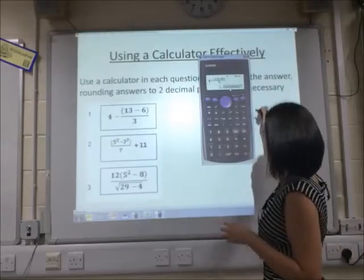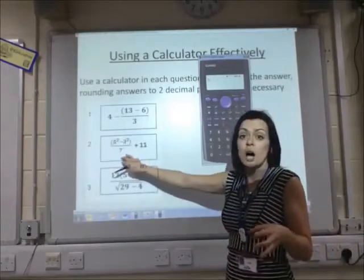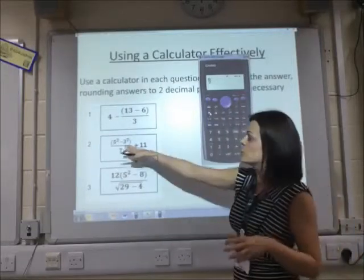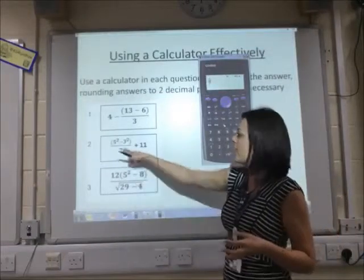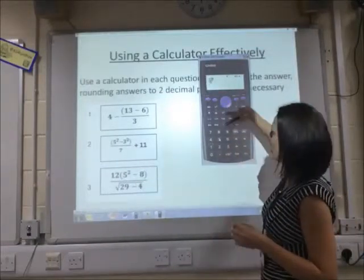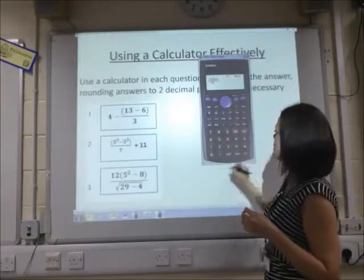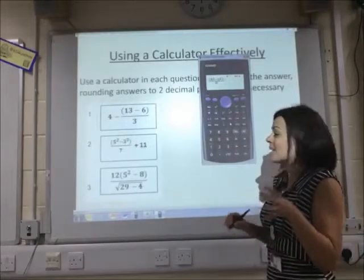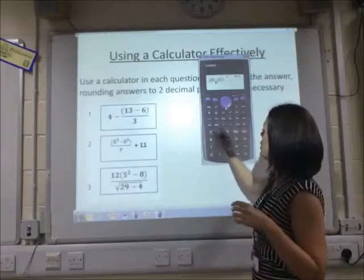For number 2, same sort of thing. We've got a fraction to start with this time, so I'm going to press my fraction button. On the top, I've got some brackets. In the bracket, I've got 5 squared. Don't forget your square buttons up here near the arrows. Take away 3 squared. Close the brackets, and go to the bottom of your fraction next. So, put the 7 on the bottom.